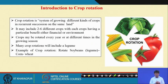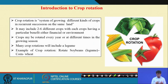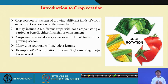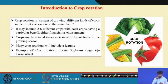Crop rotation is a system of growing different kinds of crops in recurrent sessions on the same land. It may include 2 to 6 different crops, each with particular benefits — either financial or environmental. Compatible crops should be chosen that benefit the economy and also maintain soil health and the environment on a long-term basis.